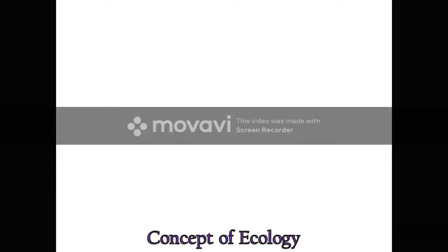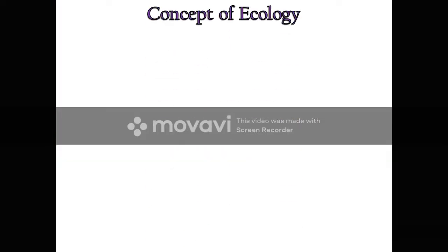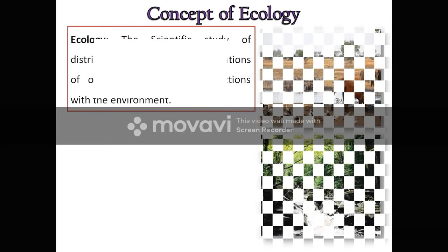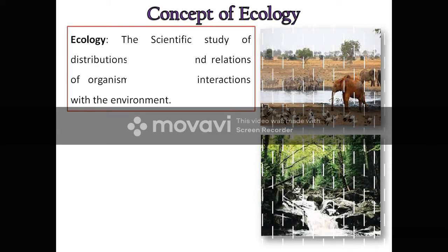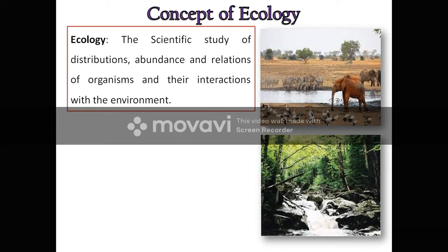Let us begin with the Concept of Ecology. Ecology is actually a Greek word. It has a Greek origin. 'Eco' means house or living relations and 'Logi' means study. So what is Ecology? It is the scientific study of the distribution, abundance and relations of organisms and their interactions with the environment.